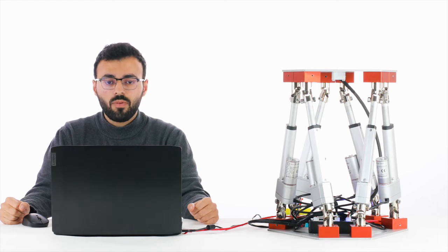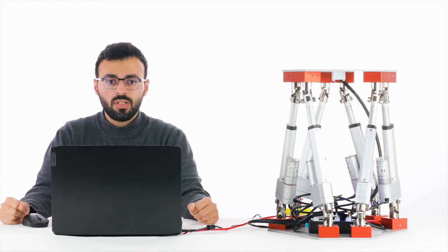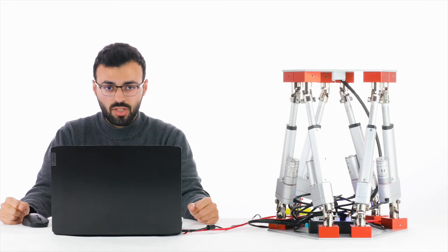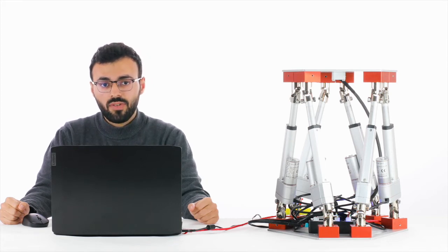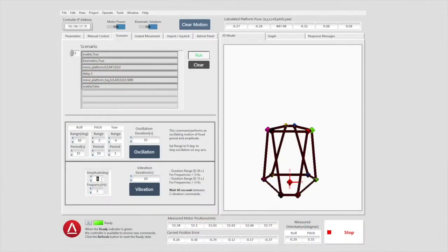And for vibration mode, our platform will vibrate continuously for a specific duration. We can set the amplitude and frequency individually. In this example, I set the amplitude for 10 degrees and the frequency 3 Hz. The vibration duration will be 10 seconds.